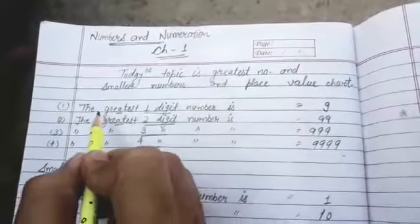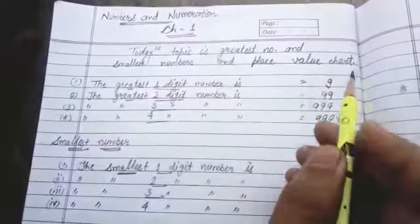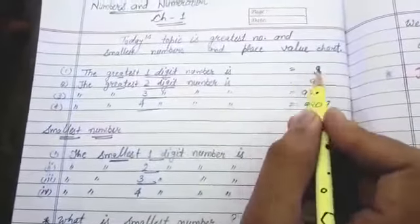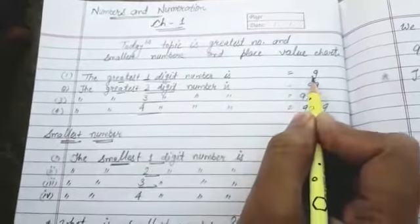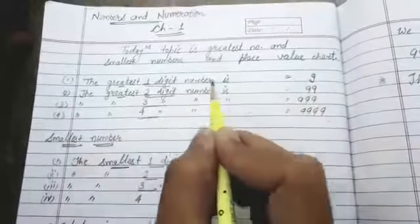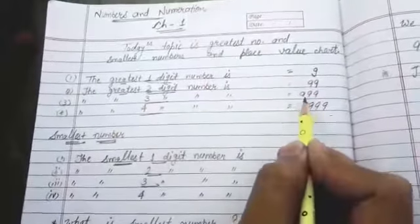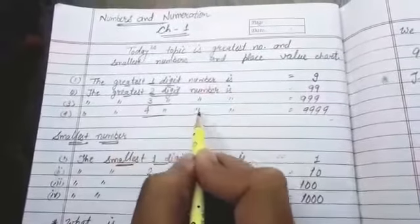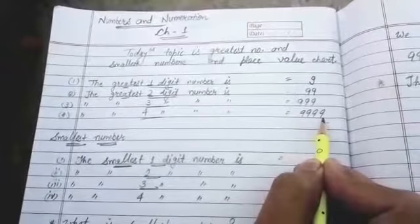First of all the greatest one digit number is 9. You all know that 0 to 9 which is the biggest number? 9. Then the greatest one digit is 9. Greatest two digit is 99. Greatest three digit number is 999 and greatest four digit number is 9999.